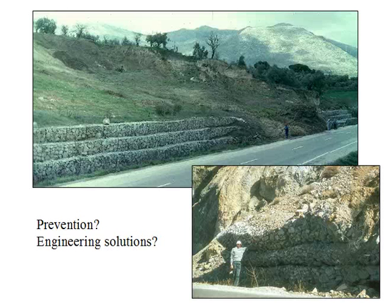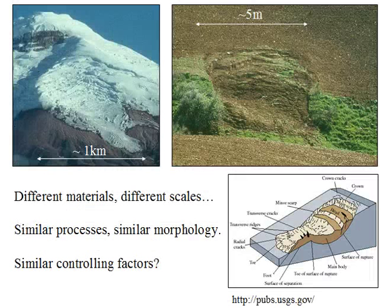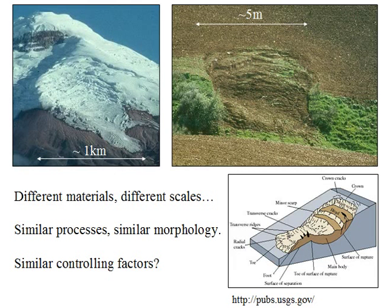We'll look at some of the basics and you can see if you can work it out. Consider these two examples to begin with: a glacier on the side of Cotopaxi Volcano in Ecuador and a hill slope in Almeria in southern Spain. They're features at very different scales and in very different materials moving at different rates, but see how both of them match the theoretical morphology described in the diagram below. So does this suggest that there might be similar processes and similar controlling factors at work?